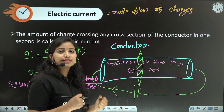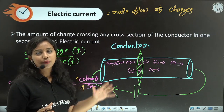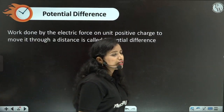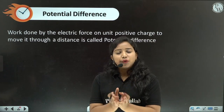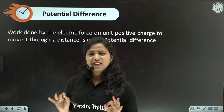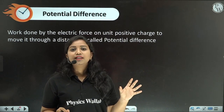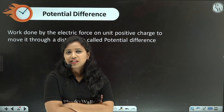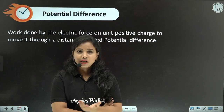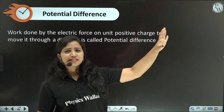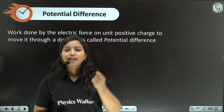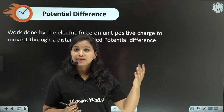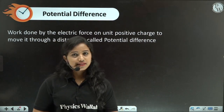Now, potential difference. In general, potential difference means work done — simply put, it is work done on a charge. Work done on one positive charge: to bring a charge from one point — say from infinity — to a required point, you need to do some work. That work done per charge is what we call potential difference.